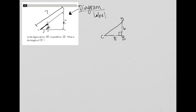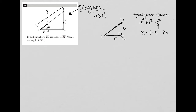Anytime I'm trying to find the third side, I know I can use the Pythagorean theorem: A squared plus B squared equals C squared, remembering that C must always be the hypotenuse. But I also look for a special right triangle — a 3-4-5. In this case, multiplying by 2: 3×2=6, 4×2=8, and 5×2=10, which means this side here must be 10.